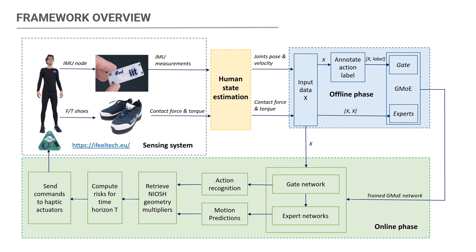The NIOSH geometric multipliers are retrieved from the network predictions, which enables the computation of lifting risks for a given future time horizon. Once any potential risk is detected in this time horizon, a corresponding command is sent to the haptic actuator integrated in the IMU node mounted on the human pelvis.